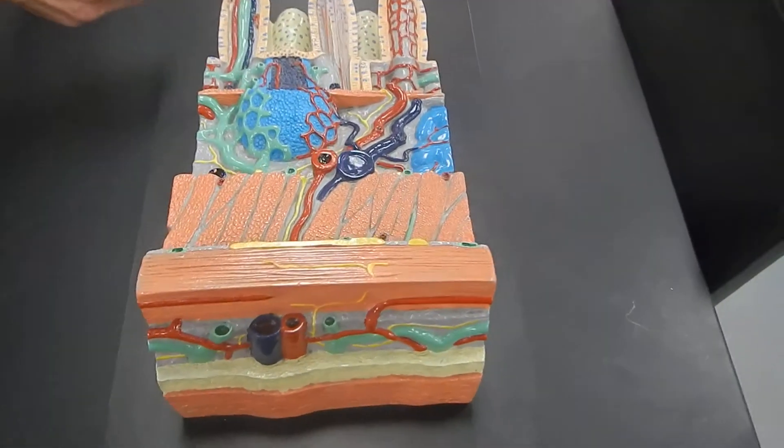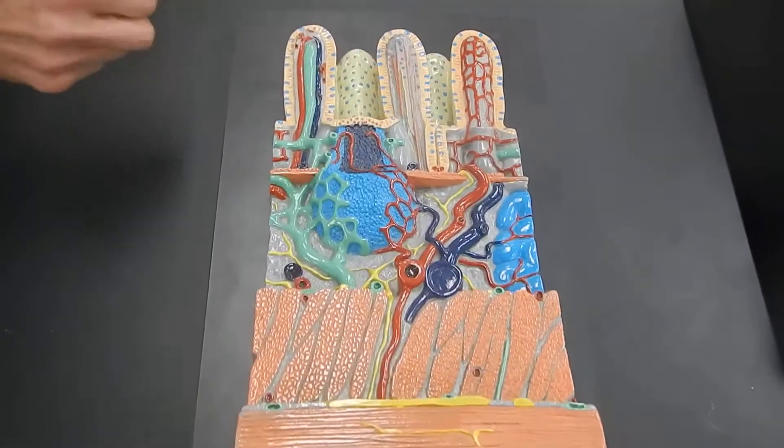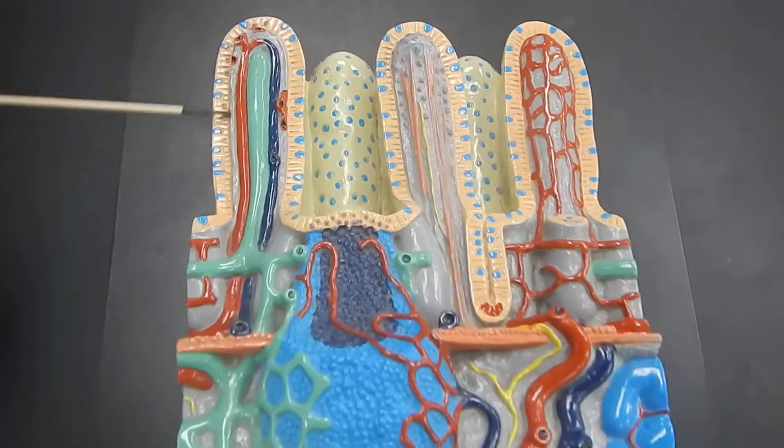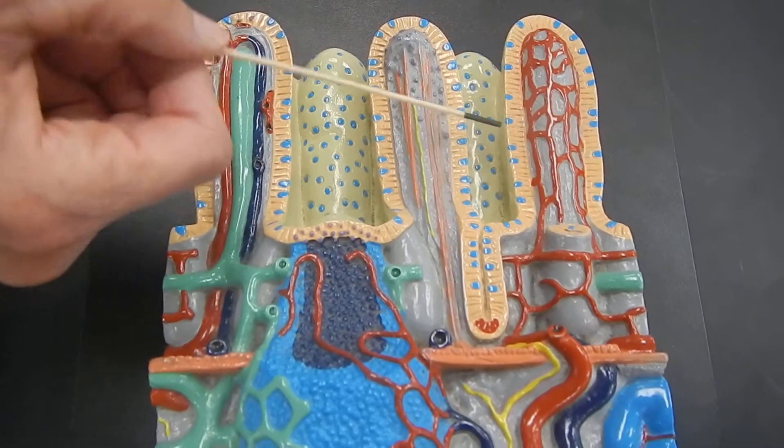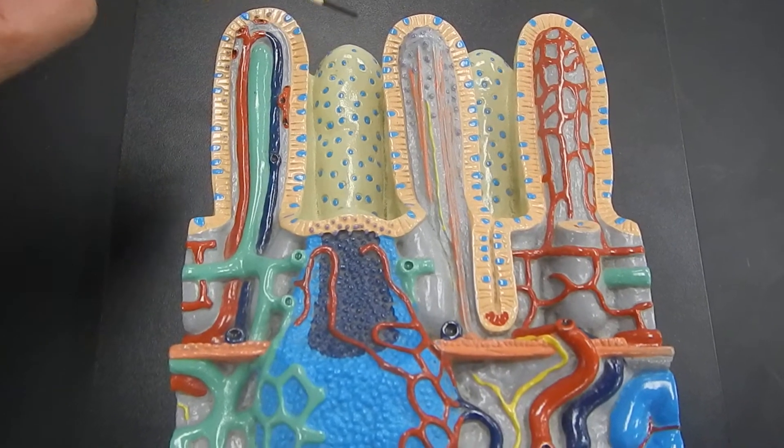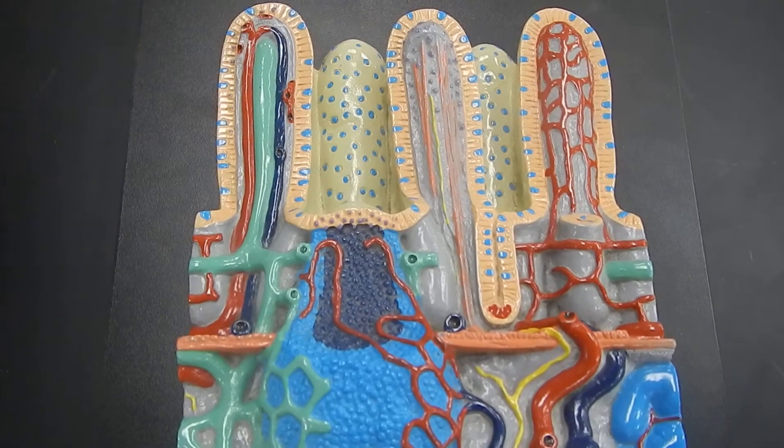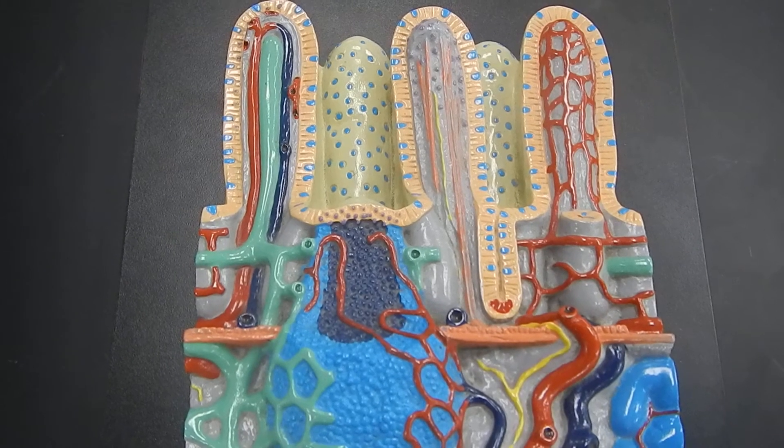So let's start from the inside, closest to the food. These finger-like structures, one, two, three, here would be another one, there would be a fifth one. These finger-like structures, each one is called a villus.